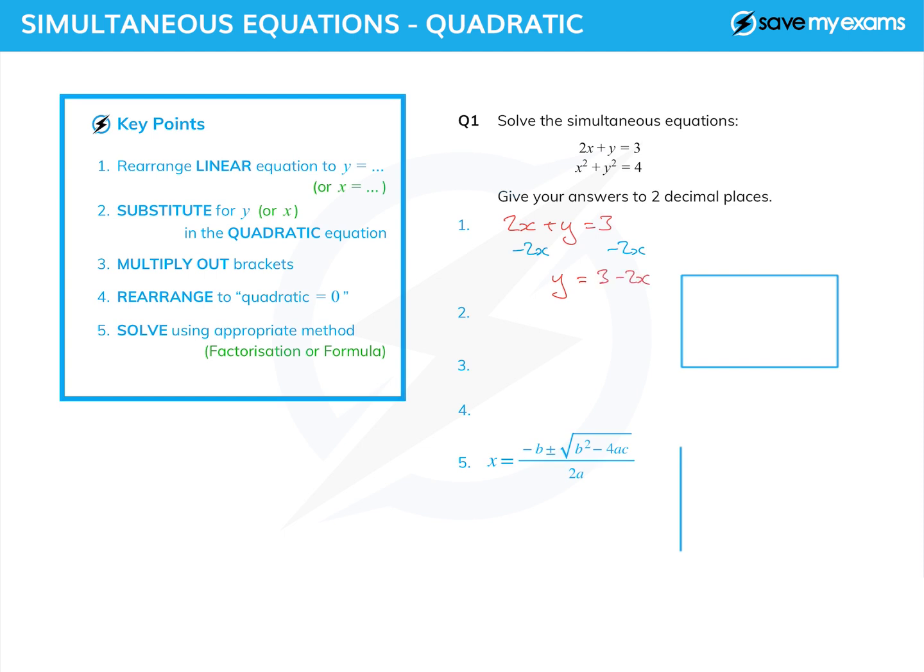I'm now going to take that y, so y equals three minus 2x, and substitute it in for that y there in the quadratic bit. So I'm going to get x squared plus y squared, but y is three minus 2x squared equals four. You can see exactly what I've done. I've replaced that y by three minus 2x to get x squared plus three minus 2x squared equals the four.